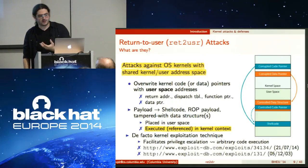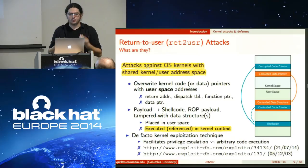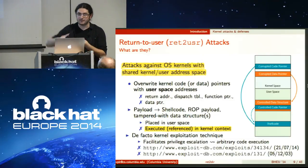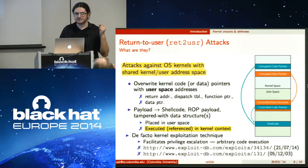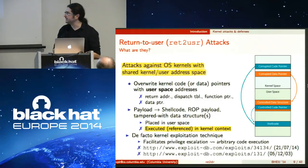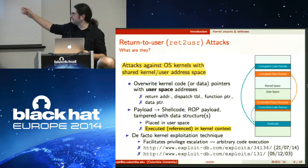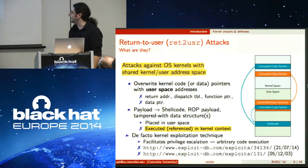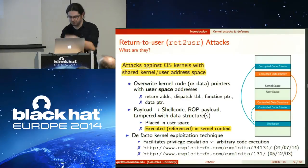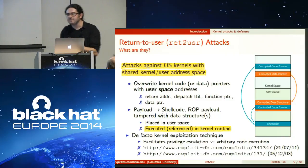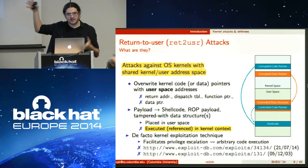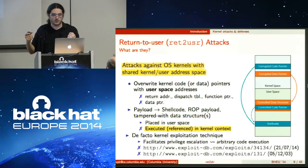Return-to-user attacks work against kernels with a shared kernel/user address space layout. They work by overwriting kernel code or data pointers with user-space addresses. The payload — whether shell code, ROP payload, or tampered data structures — is placed in user space but executed or referenced from the kernel context. This has been the de facto kernel exploitation technique, with exploits on ExploitDB using it since 2003 and even recently released ones still using the same technique.